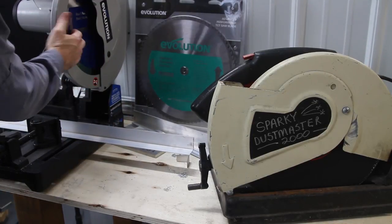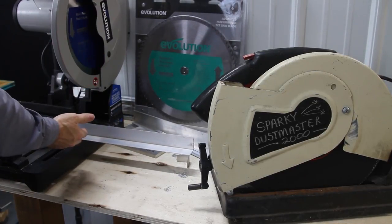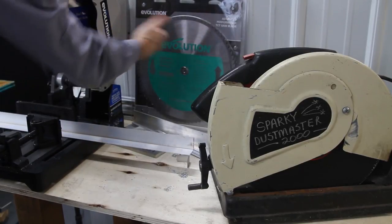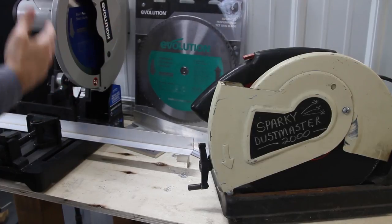The question everybody has: can you just leave the steel blade in there and cut aluminum? The answer is yes. Is there a difference in the cut quality when you're cutting aluminum with the two different blades? Yes, there is a difference.